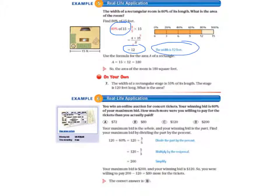So then we use the formula for the area of a rectangle. Area is length times width, so 15 times 12 equals 180 square feet.